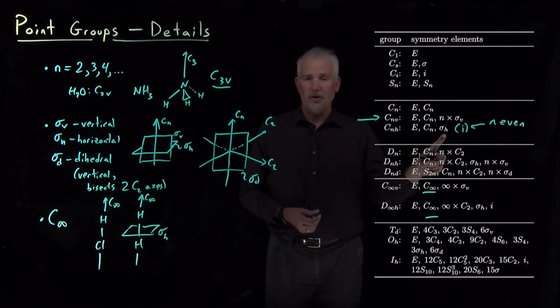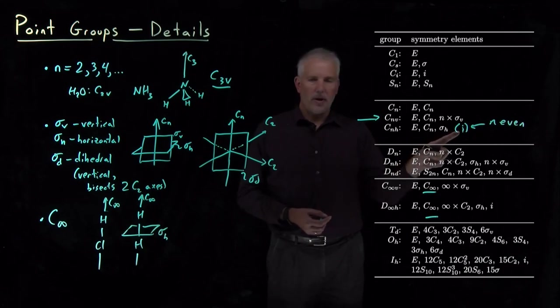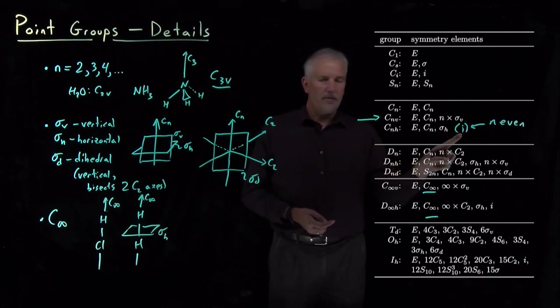But does not have the inversion center. So the ones that require this little addition, CnH has an inversion if N is even.